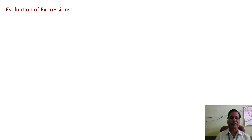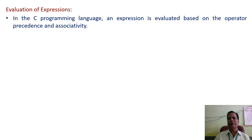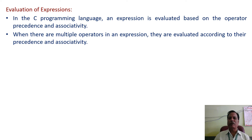Now, let us look at the evaluation of expressions. In the C programming language, an expression is evaluated based on operator precedence and associativity. So we should know the precedence and associativity of the operators used in the expression. When there are multiple operators in an expression, they are evaluated according to their precedence and associativity.